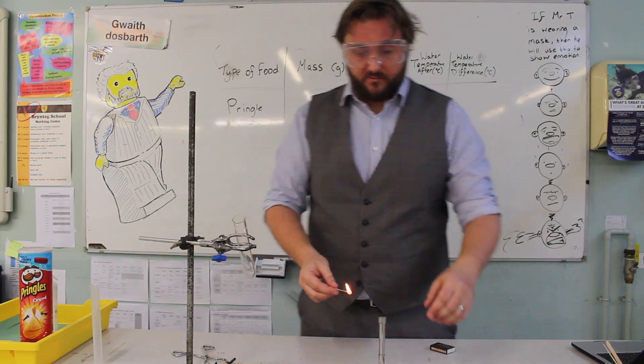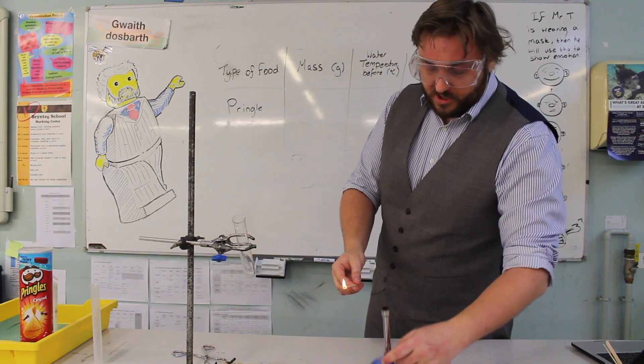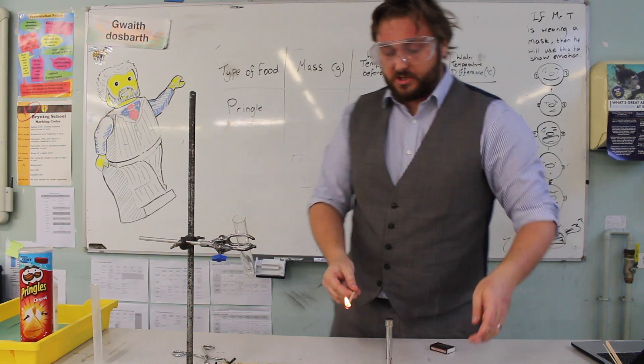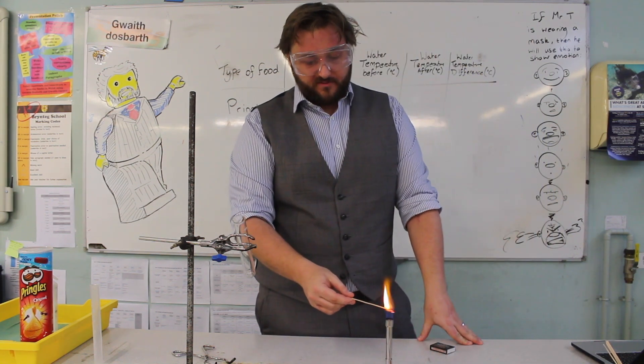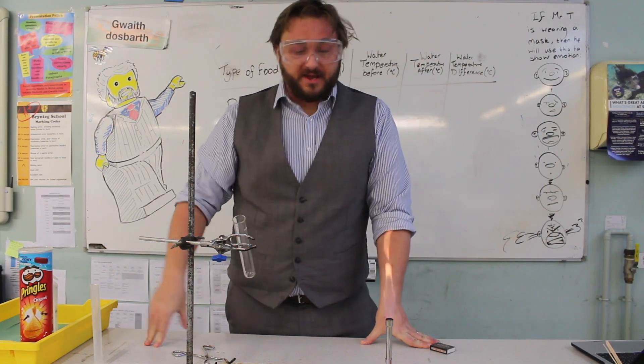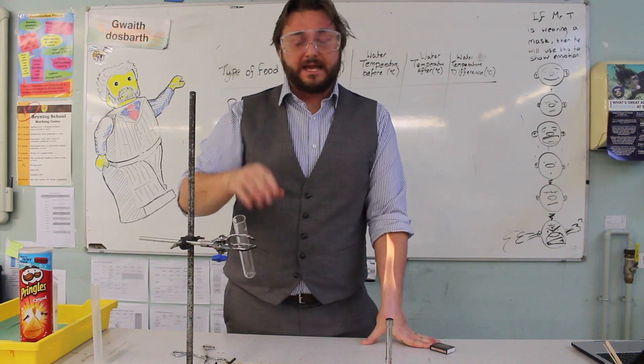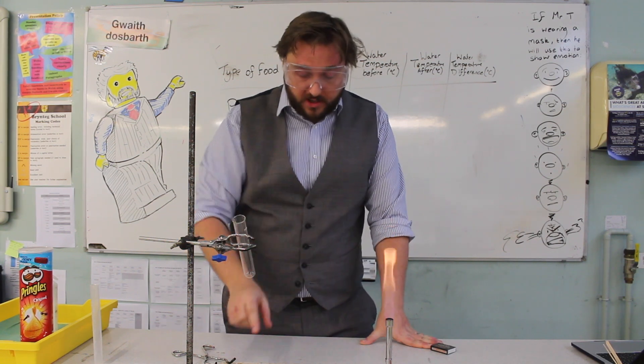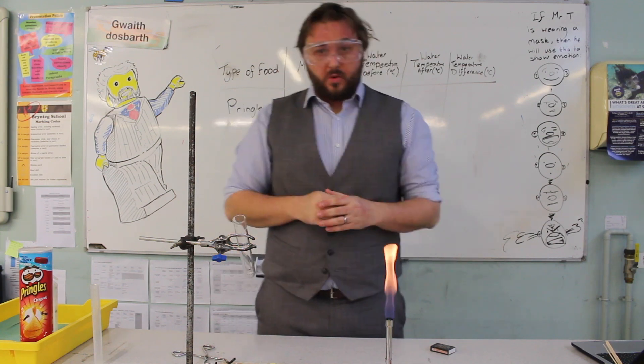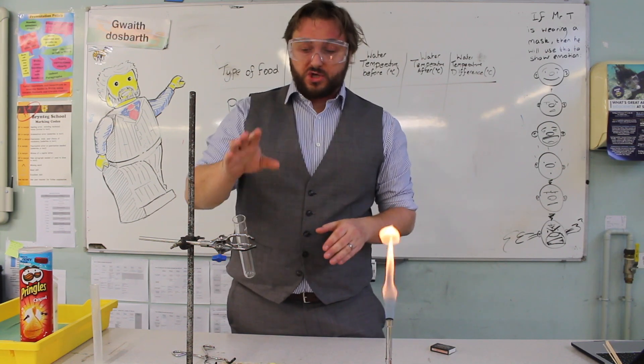The first thing you're going to do is light your Bunsen burner. The reason for this is because you're going to use a Bunsen burner to light your crisp on fire. A common misunderstanding here is that we're using the Bunsen burner to heat up your apparatus. You're not. You're only using it to light your crisp on fire. Once your Bunsen burner is lit, we can just leave that on.